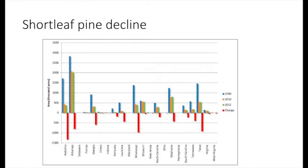We see it with shortleaf pine too. Across the entire range of shortleaf pine, spanning many states across the eastern United States, there's been a 53% reduction in shortleaf pine acreage since 1980 — so in 40 years — based on the same forest inventory and analysis plots. We see it in almost every state where shortleaf pine occurs. We're losing shortleaf pine from this landscape, and fire's not the only reason, but it's part of that reason.